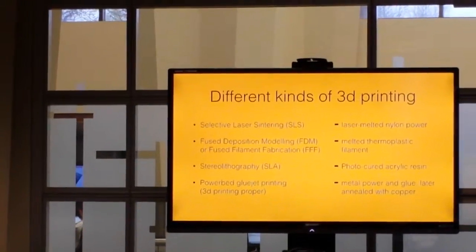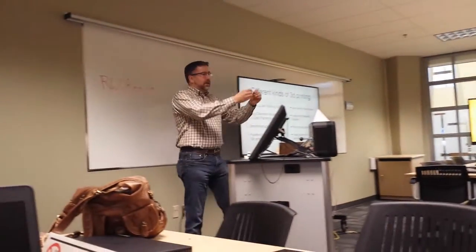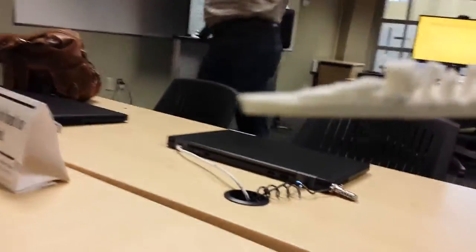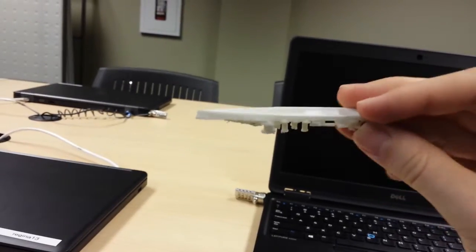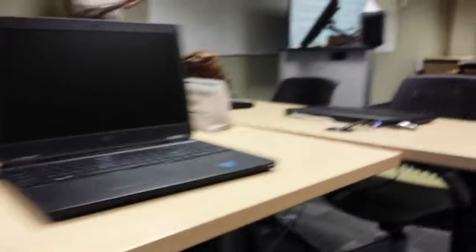Selective laser sintering is one of the better 3D printing models. This is a little boat that was made with nylon selective laser sintering. Really high detail. The way this works is you've got a big bed of nylon powder and you fire a laser beam at it and then that fuses the nylon powder together and you can make flexible materials and all sorts of stuff.